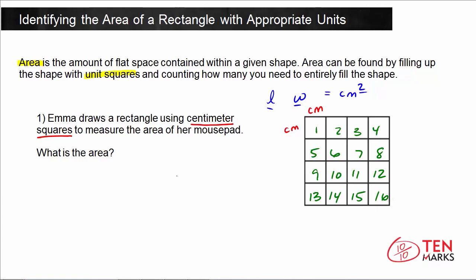So there's 16 unit squares in here. Now let's not forget the units. Since these are centimeter squares, we're going to use the units of centimeters squared. That means Emma's mouse pad is 16 centimeters squared in area.